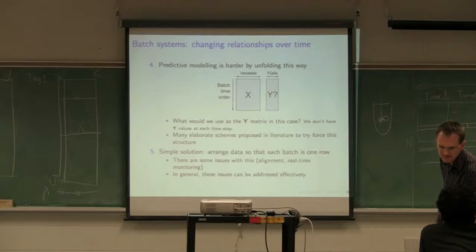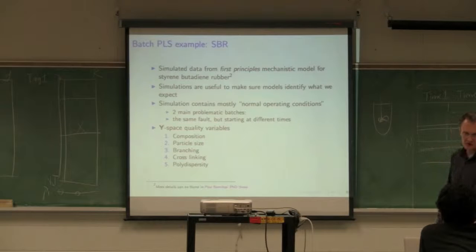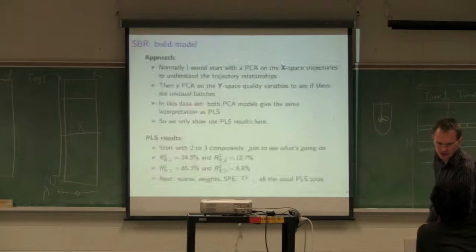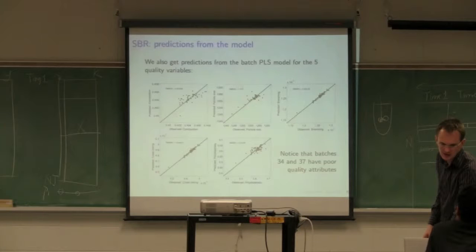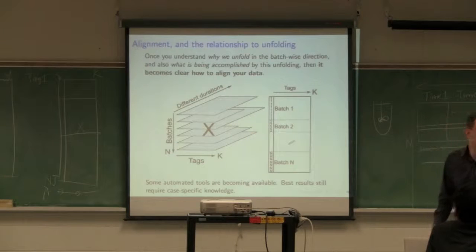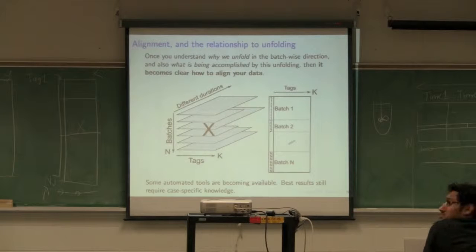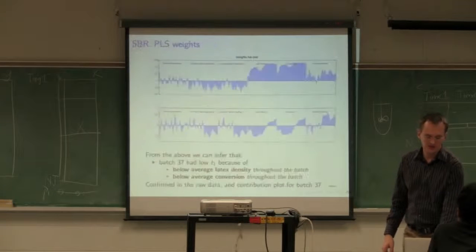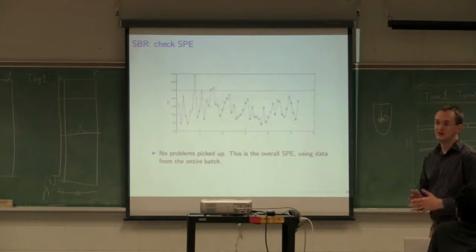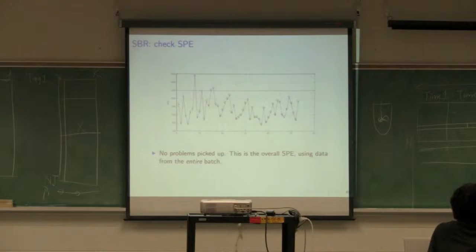As I said earlier, there's been many elaborate schemes proposed in the literature. It's surprising what people will come up with to force the data into long x and y matrices. I do know one reason why they do it though: with this particular approach, you don't have to align. You can have batches of unequal duration. That's the only key advantage, but there's so many negatives that it far outweighs any positives.